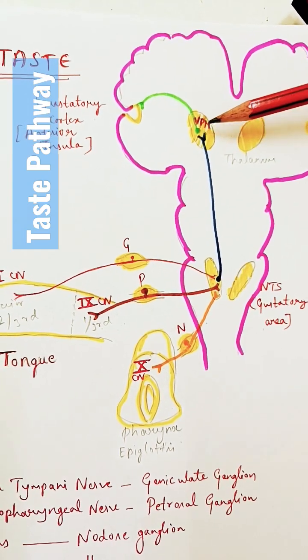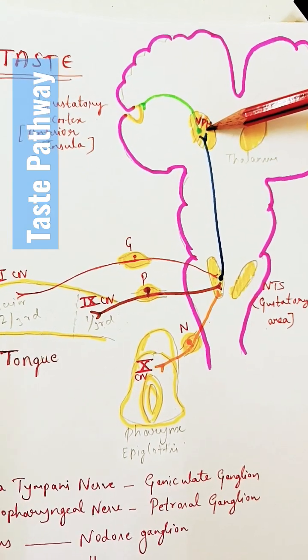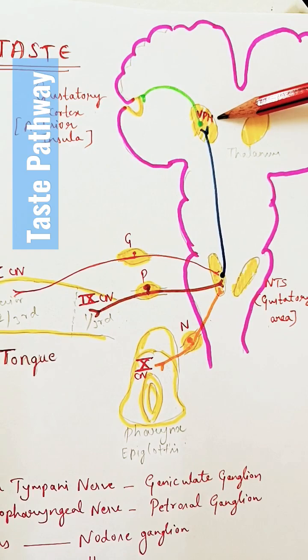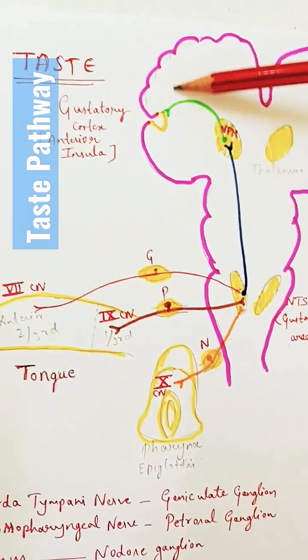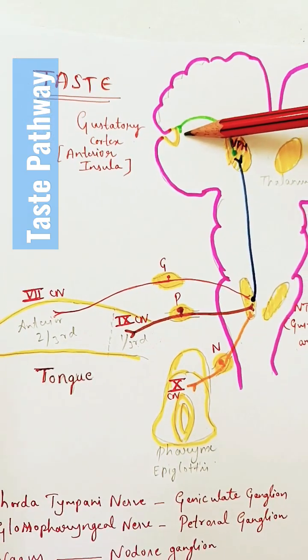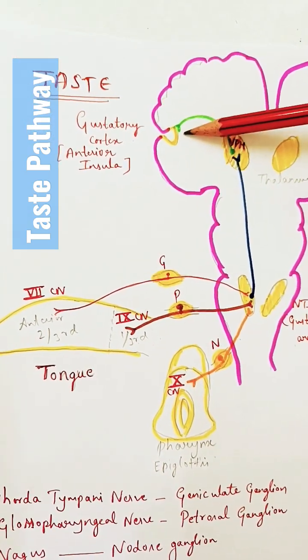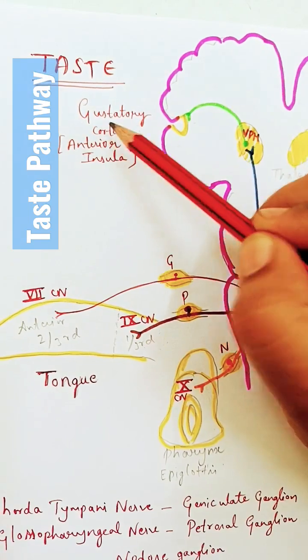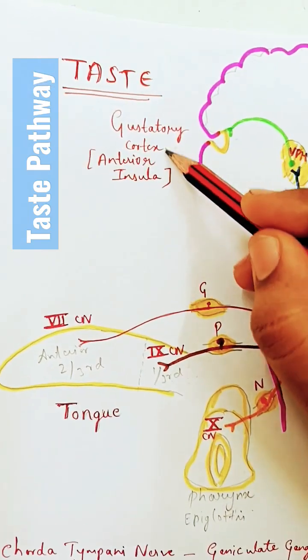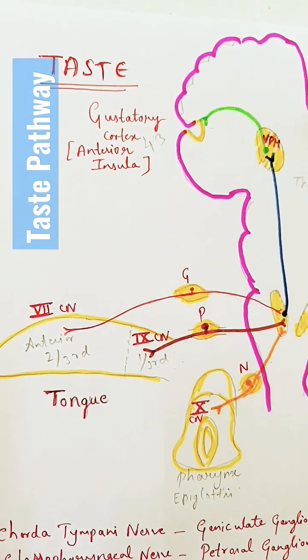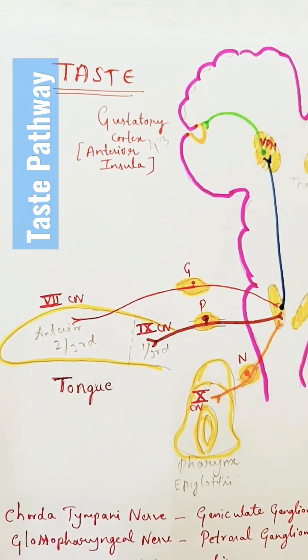The third-order neuron arises from the VPM nucleus of the thalamus — VPM stands for ventral posteromedial nucleus of the thalamus — and ends in the gustatory cortex, which is area number 43. You can remember the area number 43, which is the insular cortex.